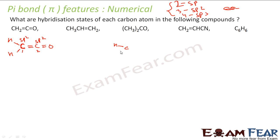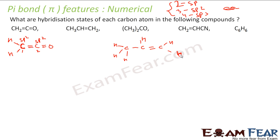Let's take the next one: CH3-CH=CH2. Let me number the carbons as carbon 1, 2, and 3. Carbon 1 is linked to 4 atoms, so it is Sp3. Carbon 2 is linked to 3 atoms, so it is Sp2. Carbon 3 is also linked to 3 atoms, so it is Sp2.